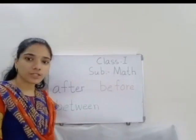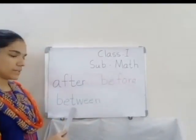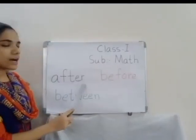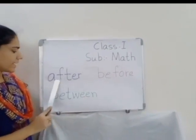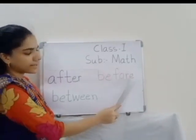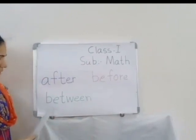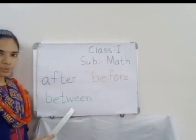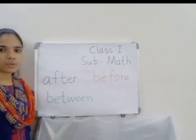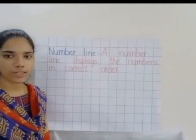So children, what is the topic we are going to learn today? After. Before. Between. A-F-T-E-R. After. B-E-F-O-R-E. Before. B-E-T-W-E-E-N. Between. Yes children. Now we will see the concept of after, before and between on a number line.